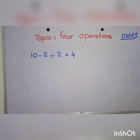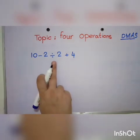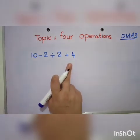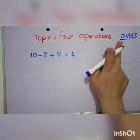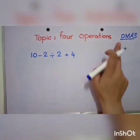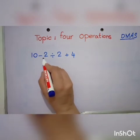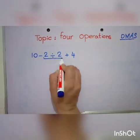Now we have another example: 10 minus 2 divided by 2 plus 4. In this we have 3 operations. According to the same rule, we have to look first for division. Do we have division? Yes, absolutely. Now we will mark this.